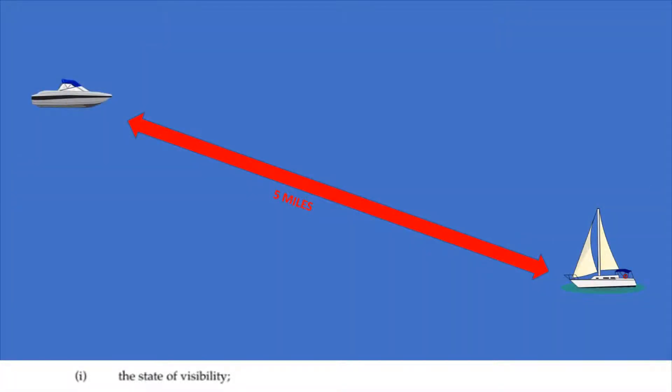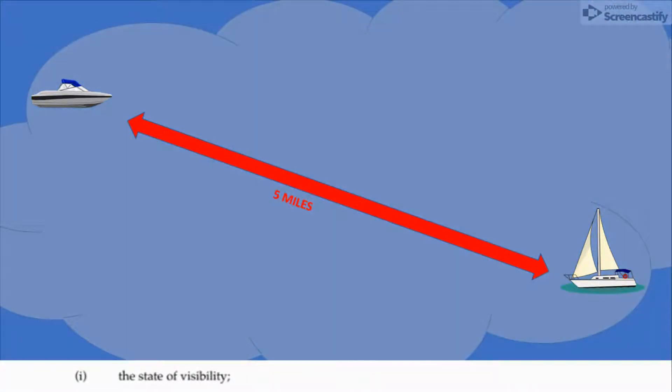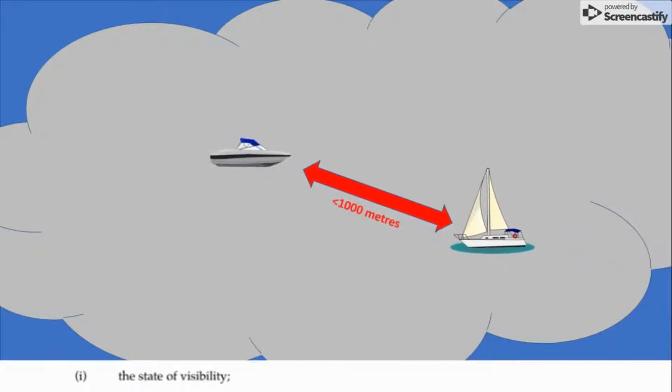Here's a second example between a sports boat and a classic sailing yacht. Lower decks mean they probably can't see as far, maybe 5 miles to the horizon. In restricted visibility, this could be reduced further to less than 1,000 metres. Very poor visibility.